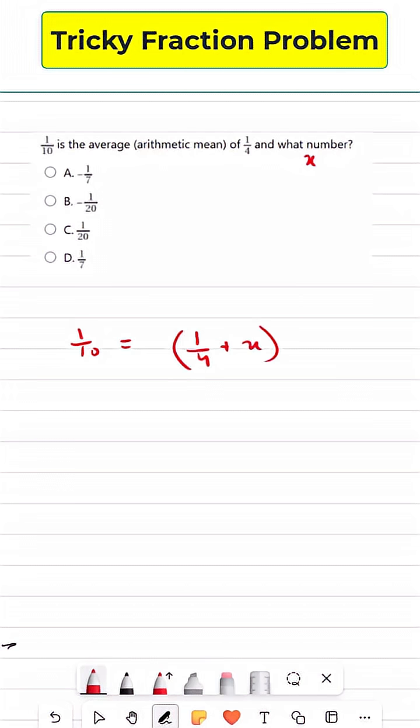That means we are just going to divide this by 2 because the average of two numbers is just the sum of those two numbers divided by 2.